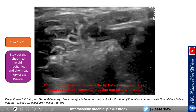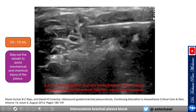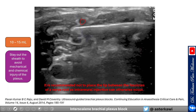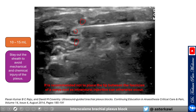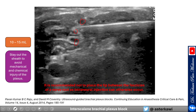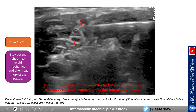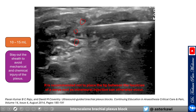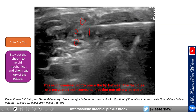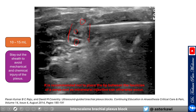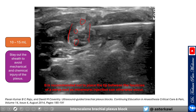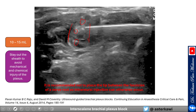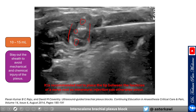In a live interscalene block video, you can see C5, C6, and C7. Older references recommended injecting between the roots to spread on both sides of the plexus, but this can be dangerous due to mechanical or chemical injury to the sheath. A better approach is to inject on one side, then withdraw and redirect to the other side without going through the plexus. Ten to fifteen milliliters tends to be enough.